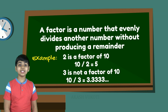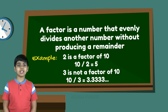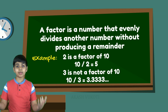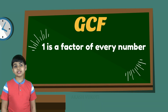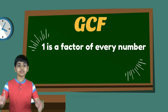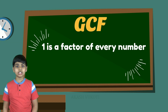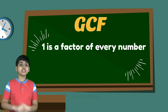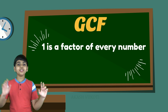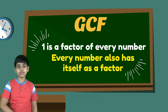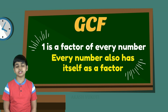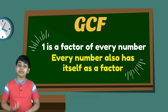So, 3 is not a factor of 10 because it has a decimal part — there's a remainder. Next, 1 is actually a factor of every number since 1 times any number is just that number. Also, every number has itself as a factor as well, because itself times 1 is, well, itself.